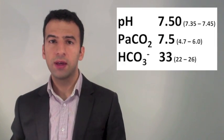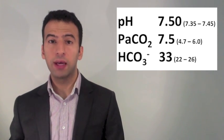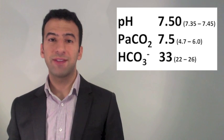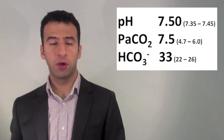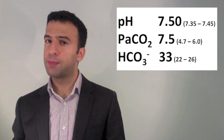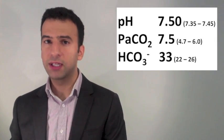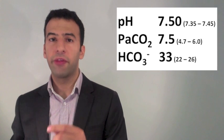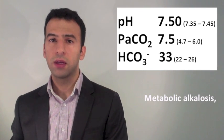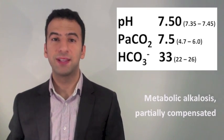Two more to go. Step 1: the pH is 7.50 — that's an alkalemia. Step 2: the CO2 is 7.5 — that's acidifying because it's high. They're both moving in opposite directions, so it's probably a metabolic alkalosis. In Step 3, the bicarbonate is high — that's alkalinising — confirming our suspicion that this is a metabolic alkalosis. The CO2 is high, moving in the opposite direction to the alkalosis, so there is partial compensation.